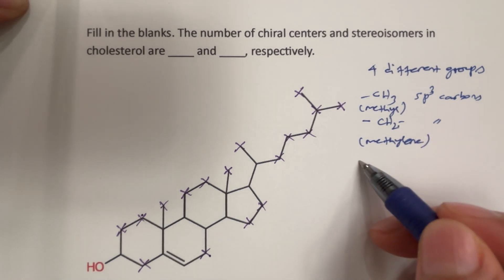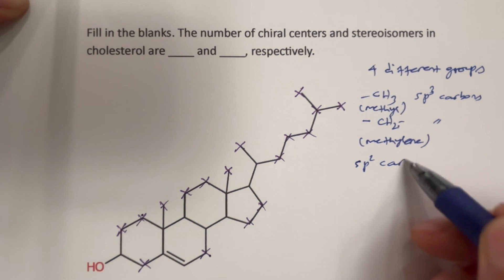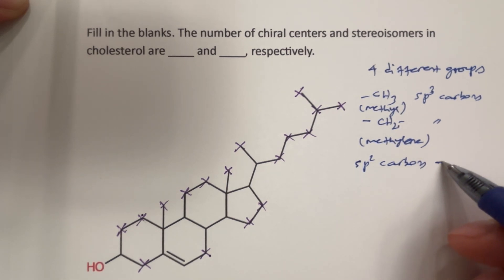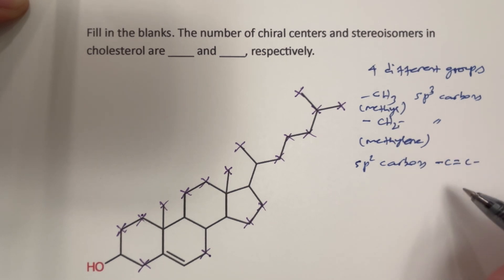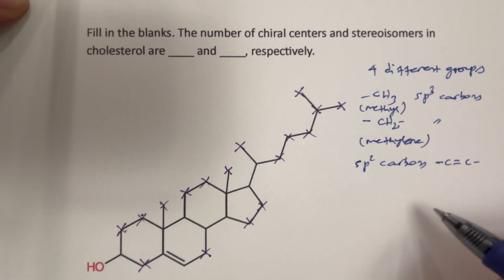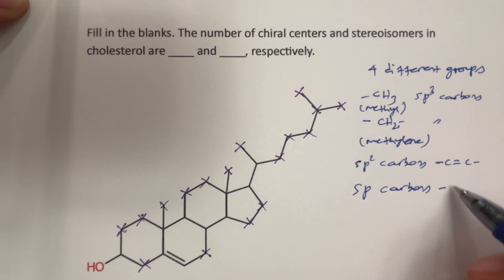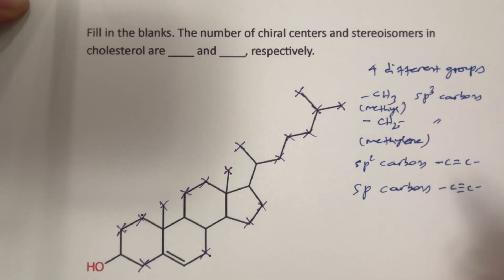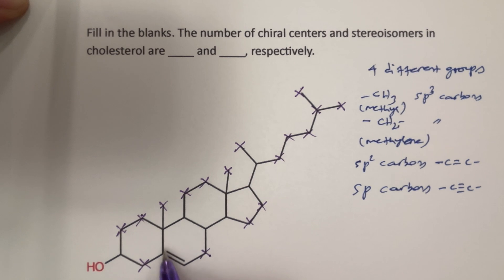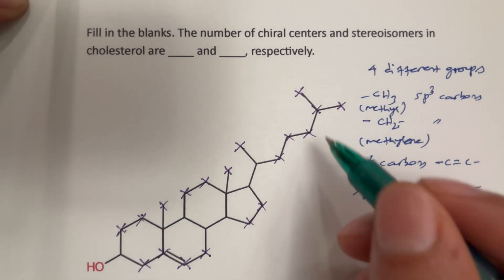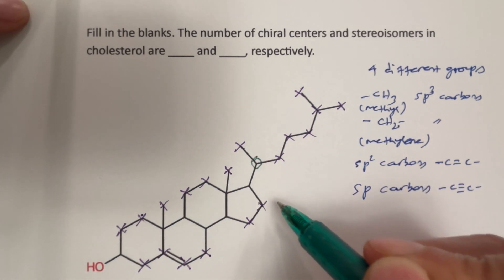We can also eliminate sp2 carbons. If you see a carbon-carbon double bond or a carbonyl group, you can definitely eliminate those. You can also eliminate sp carbons — if you see a triple bond, then you can eliminate those carbons as well. Here we do have a carbon-carbon double bond, so we can eliminate these two carbons as well.